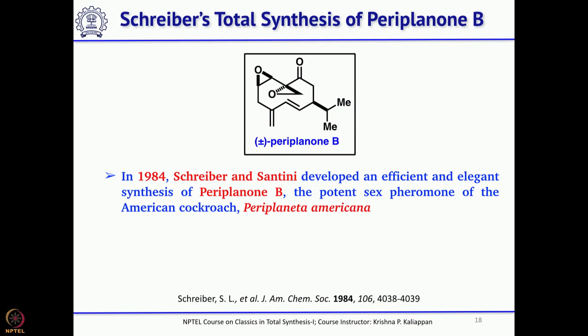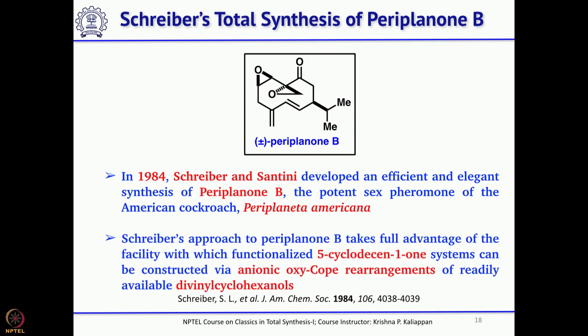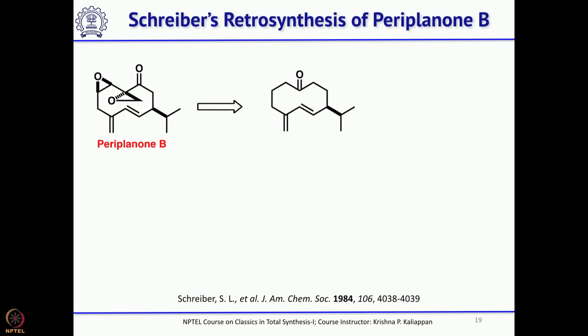The second total synthesis of Periplanone B, which we will discuss, was reported by Stuart Schreiber's group in 1984. He also used anionic oxy-Cope rearrangement but on a different substrate — anionic oxy-Cope rearrangement followed by electrocyclic ring opening as the key reaction to introduce the diene present in this molecule.